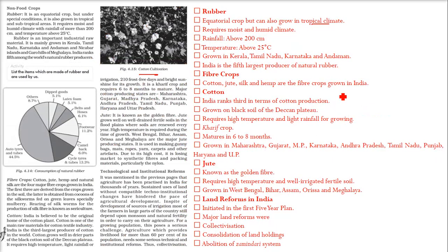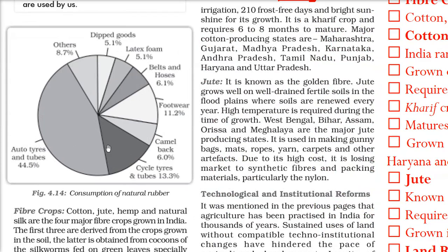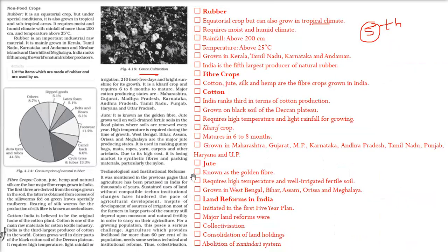India is the fifth largest producer of natural rubber. Most of the rubber we generate is used in auto tires and tubes, dipped goods, latex, belts and hoses, footwear, camelback, and cycle tires and tubes.